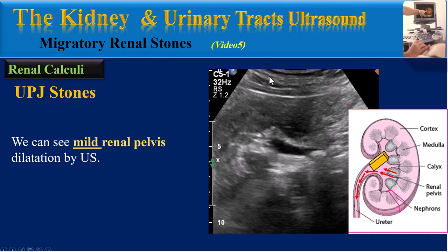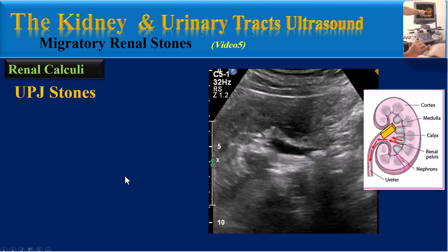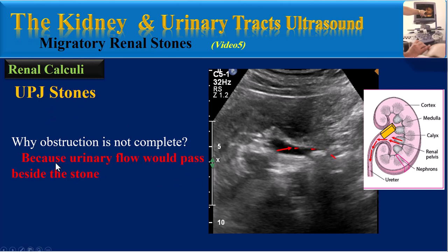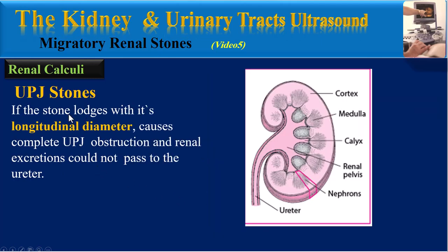When the patient presents for ultrasound, we can see mild renal pelvis dilatation. In this trans-abdominal ultrasound image from the kidney, we can see the UPJ stone, the renal cortex, and the renal pelvis with mild dilatation. The obstruction is not complete because urinary flow would pass beside the stone into the ureter, as you can see here.